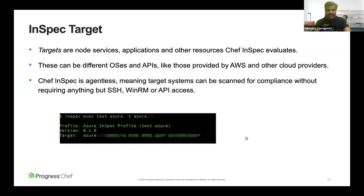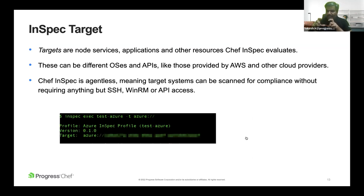InSpec target is used to denote a machine or node on which the scan — or audit — is to be performed. It can be an OS, a platform, an application, or any different cloud system like GCP, Azure, or AWS. The beauty of InSpec is that it is agentless — InSpec does not need to be installed on the target machine. For example, 'inspec exec test azure -t azure' where '-t' indicates the Azure target.